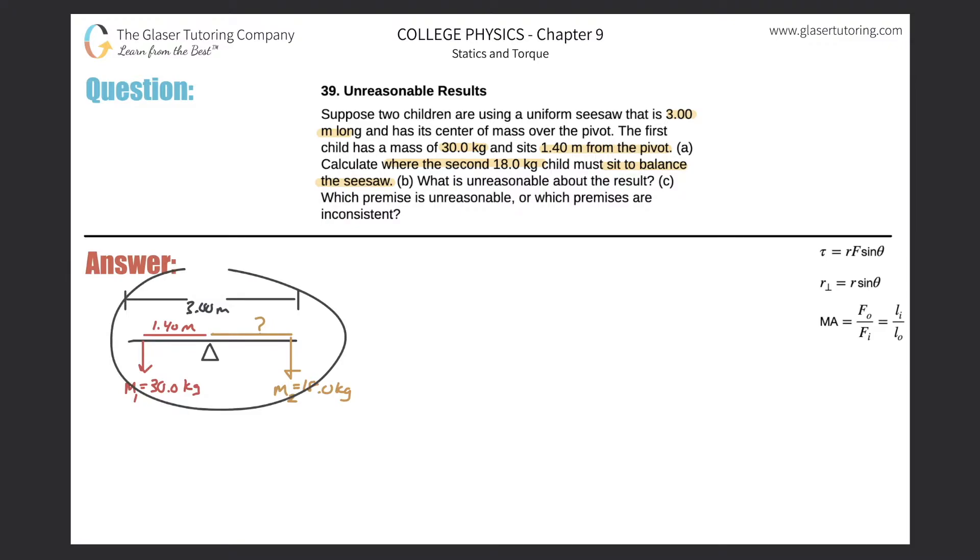All right so here's my picture. We got one child 30 kilograms of mass located at 1.4 meters from the pivot point. The center of mass of this pivot point is located right over the pivot and therefore there's no torque that's produced by the seesaw itself. Right it would be perfectly balanced.